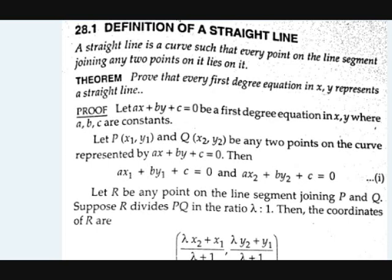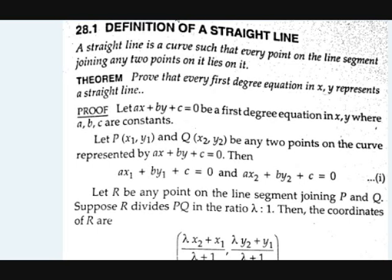From this definition, we can find that there is a theorem to express the equation of a straight line. That theorem proves that every first degree equation in x represents a straight line. For proving, we can use mathematical induction. By mathematical induction, if we take two points — as in the definition — let's build a line segment between them and take a varying point on that line segment, which should also be on that line.